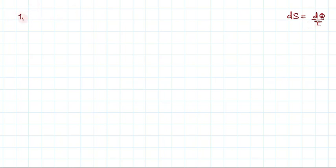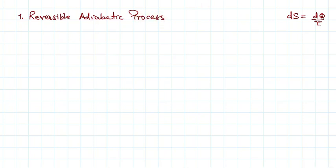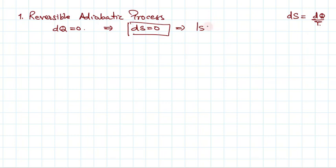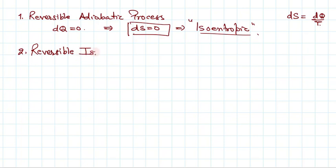Using dS = dQ/T, let's find the change in entropy in different processes. For a reversible adiabatic process: since it is adiabatic, dQ = 0, which means dS = 0. The change in entropy is zero, so this process is called an isentropic process.